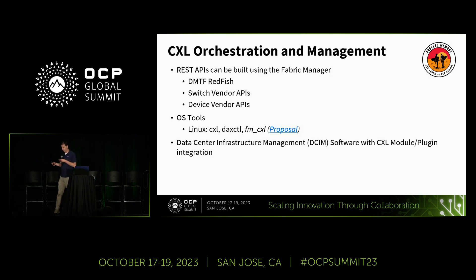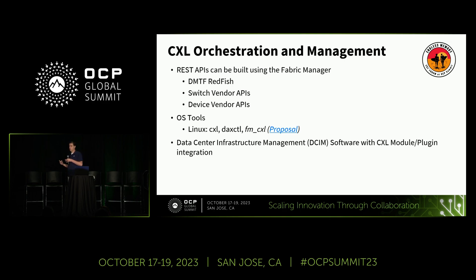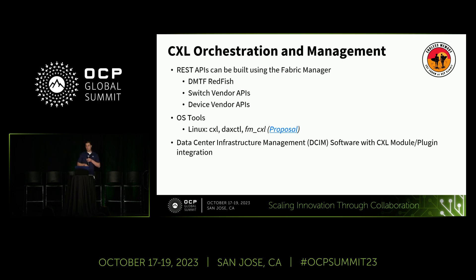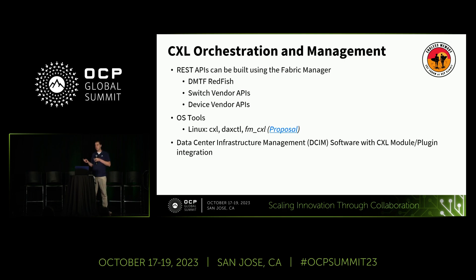Then there's the orchestration piece. Now that we have APIs and tools, somebody has to tell those things to set up the environment — for example in a Kubernetes environment where you want to instantiate a cluster or pod with specific resource requirements. You'd want to provision the hardware first. There's work going on in Kubernetes node resource infrastructure that we're also involved in. Back on OS tools, the local host has a management interface with CXL, DAX CTL, and the forthcoming FM-CXL. This has to work seamlessly with your current DCIM software management infrastructure — as a plug-in, module, or whatever software you use.